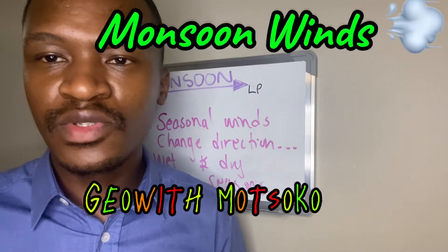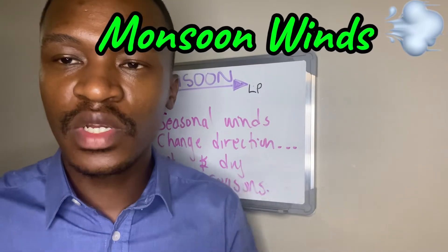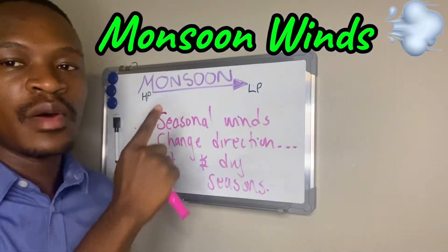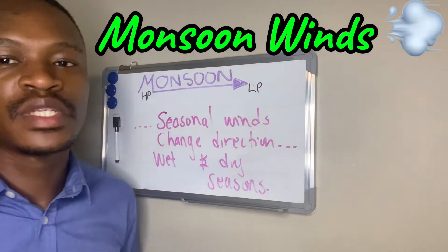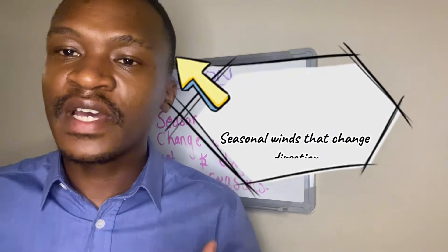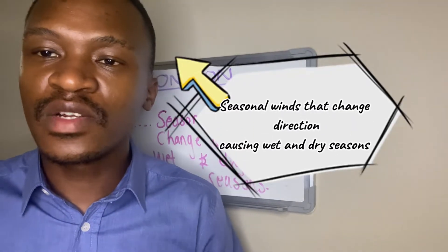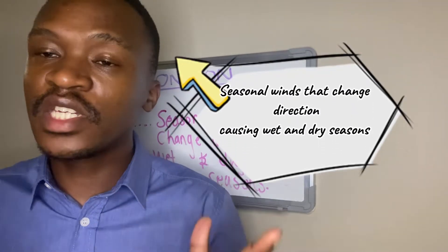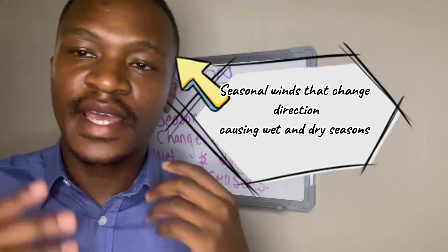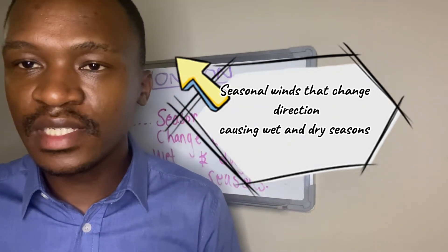Hey guys, welcome to Jiwon Mutsuku. In today's video, we are discussing monsoon winds. Monsoon winds are defined as seasonal winds which change direction, causing wet and dry seasons.